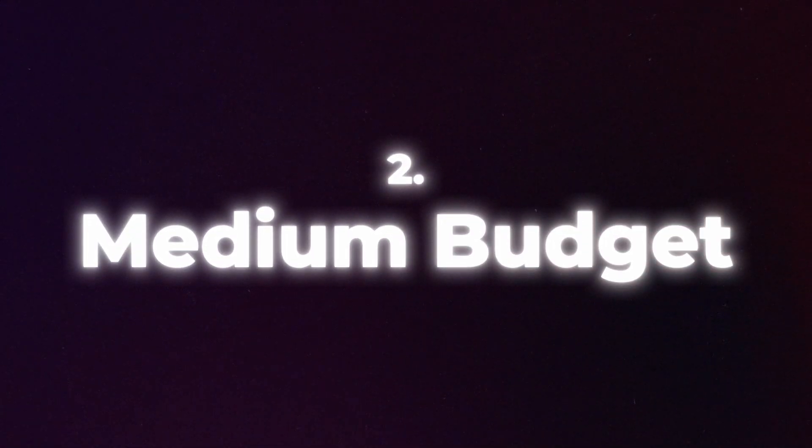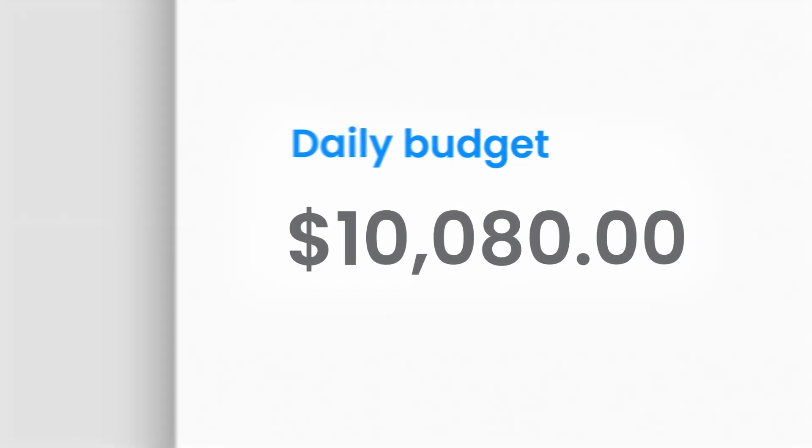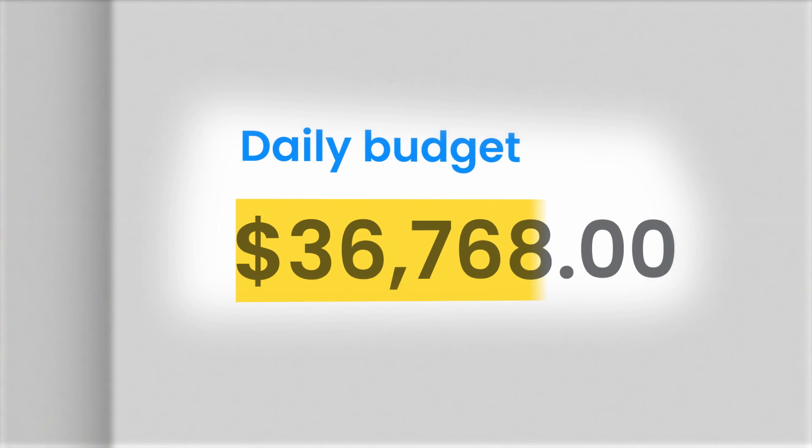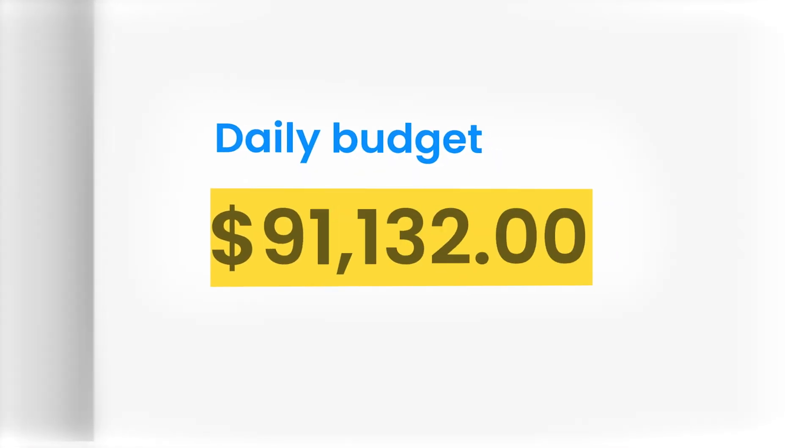If you're spending less than fifty dollars a day on Facebook ads, this video really isn't for you. My strategy is only applied to those that are spending at least fifty dollars a day. Then there's medium budget where we're spending anywhere from a thousand dollars a day all the way to fifty thousand dollars a day. It's a big range, but just wait until we get to high budget where we're spending fifty thousand dollars a day plus.